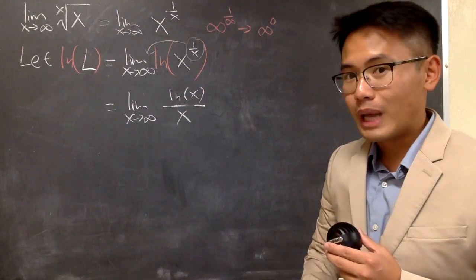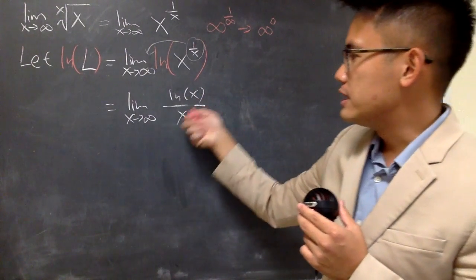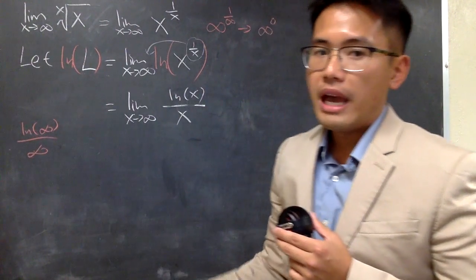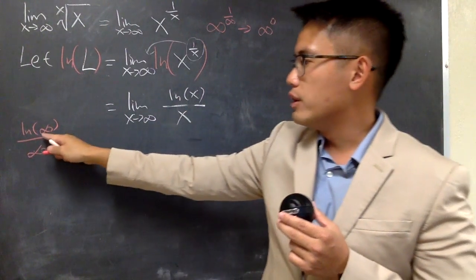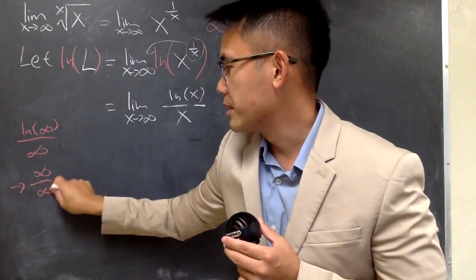So, this is pretty much what we have. And, if you now plug in infinity into here, we see that ln of infinity over infinity. And, the deal is that ln of infinity goes to infinity. And, then, of course, the denominator is infinity.